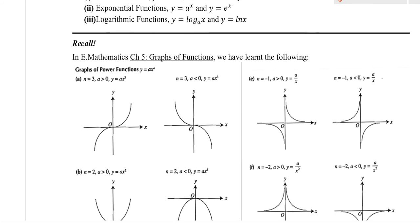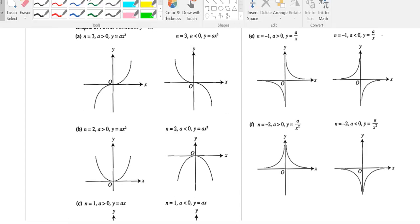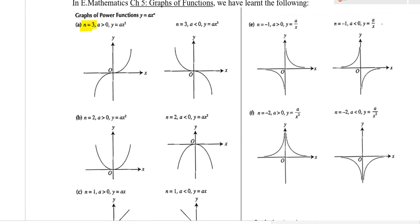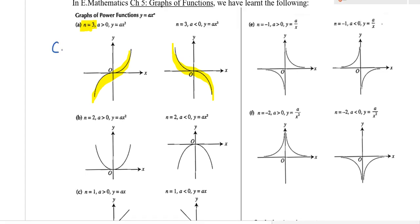Let's recap what we learned in Chapter 5. Looking at this kind of graph — you can see it has a particular shape. What is this kind of graph called? It's called a cubic shape graph.